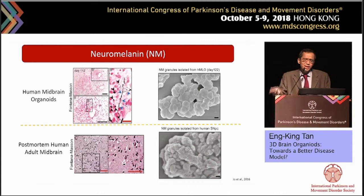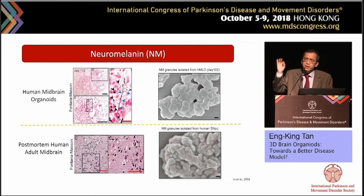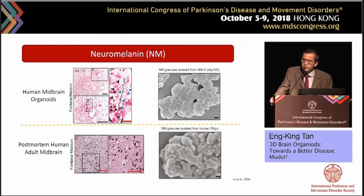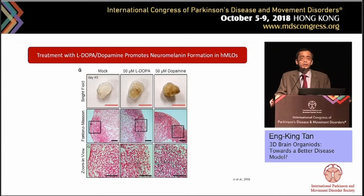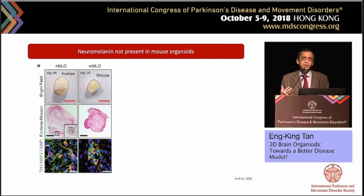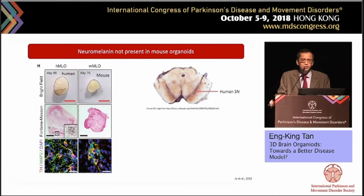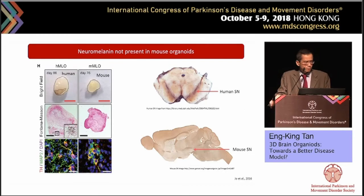To prove that these granules are neuromelanin, we showed they stain positive on Fontana-Masson staining, as you can see here, with the bottom row showing striking resemblance to post-mortem tissue. On electron microscopy in the upper row, you can see that at day 122 the very nice granules really resemble granules isolated from the human adult substantia nigra. We then showed that neuromelanin is formed by oxidative polymerization of dopamine — we treated these organoids with dopamine and L-DOPA and observed increased formation of this neuromelanin.